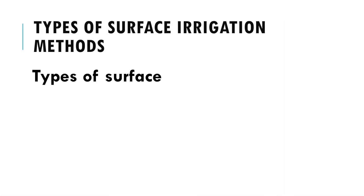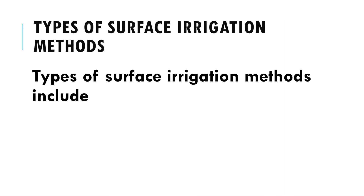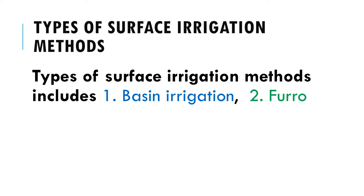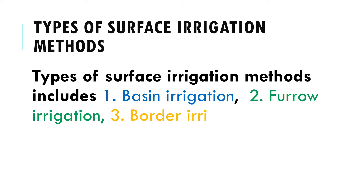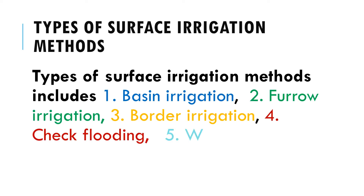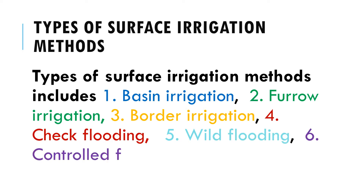Types of surface irrigation methods include: 1. Basin irrigation, 2. Furrow irrigation, 3. Border irrigation, 4. Check flooding.